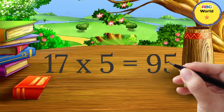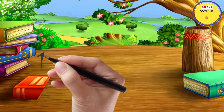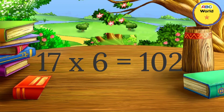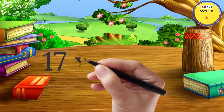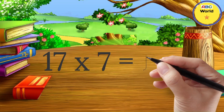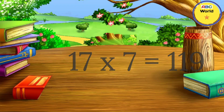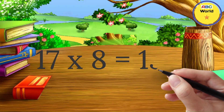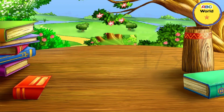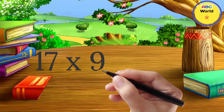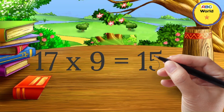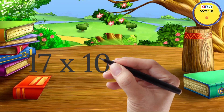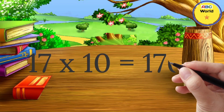Seventeen fives are ninety-five. Seventeen sixes are one hundred two. Seventeen sevens are one hundred nineteen. Seventeen eights are one hundred thirty-six. Seventeen nines are one hundred fifty-three. Seventeen tens are one hundred seventy.